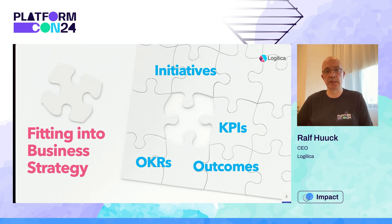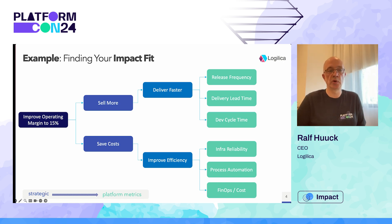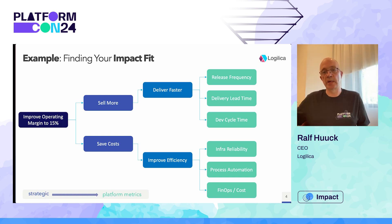Let me give you an example. Let's assume the business strategy is improving your operating margin by 15% — basically, you want to be more profitable. I've drawn a little tree here of how you might be able to align your platform engineering side with your business goals.